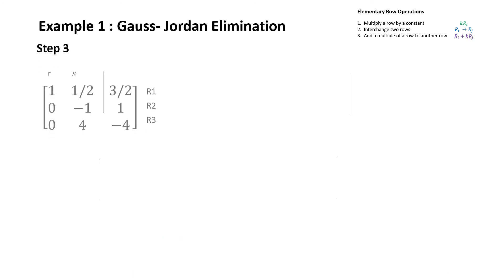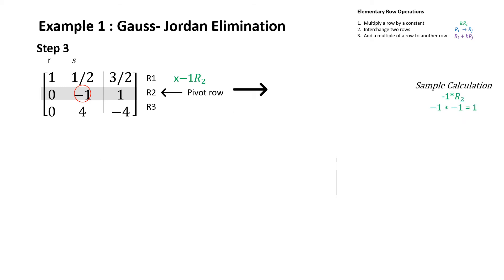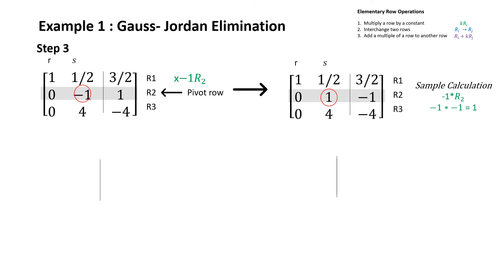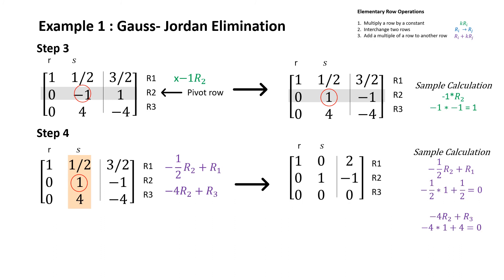Next, we move on to column two, where we want to transform the matrix to obtain a one in the pivot position. This will be done by selecting row two as the pivot row and multiplying row two by a constant. This operation leads to the matrix on the right, where we have a one as the leading entry in the non-zero row. Next, we must transform the matrix to obtain a zero for every other entry in the column, and this will be done by adding a multiple of the pivot row to another row. And this operation leads to the matrix on the right.